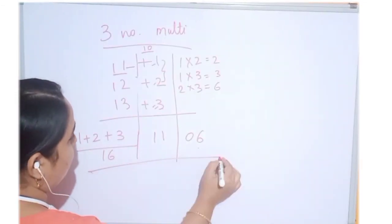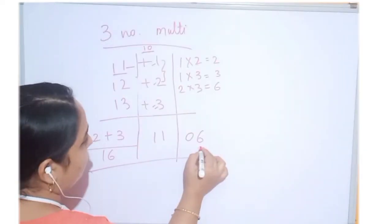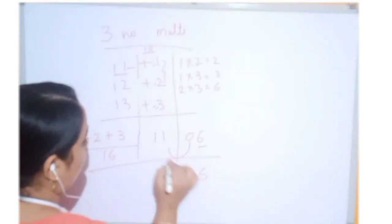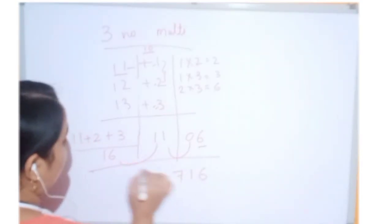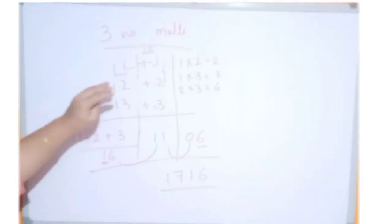And now, the simplification. So, the base will be 10 will get only one digit at one place. So, 0, 1, 7 and 1 as it is. This is the answer for 11 into 12 into 13.